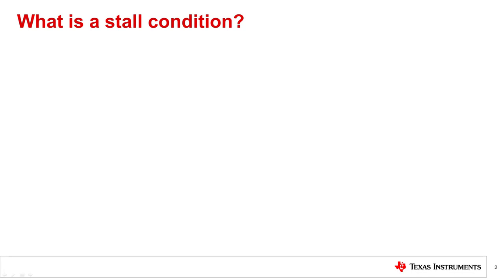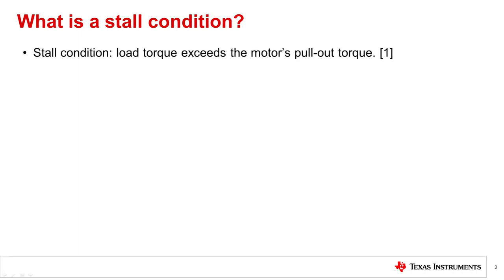Let's begin by discussing what stall is and what the main causes of stall are in a motor system. A stall condition occurs when the load torque on a motor exceeds the motor's pullout torque. The pullout torque is the maximum torque that the motor can produce at a given speed before the rotor becomes out of sync with the magnetic field. When the rotor becomes out of sync with the magnetic field, the motor will stall.